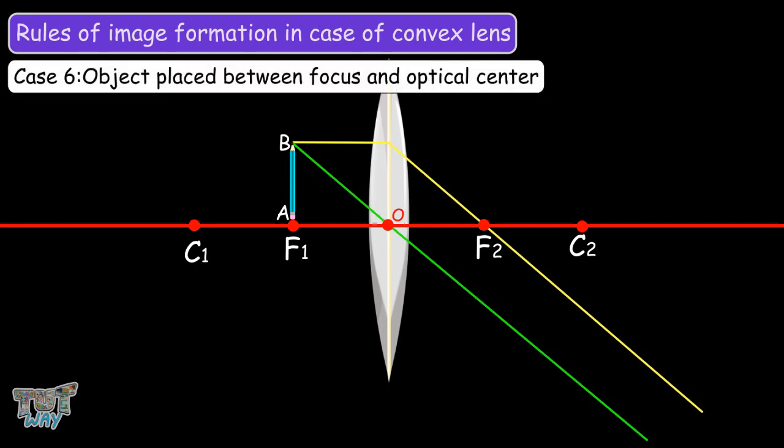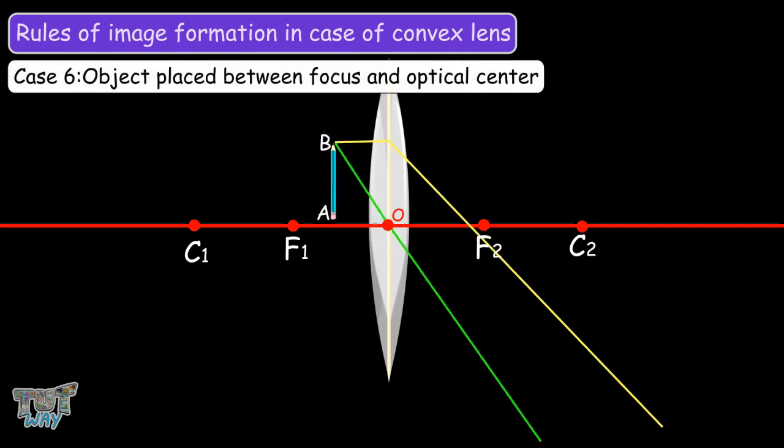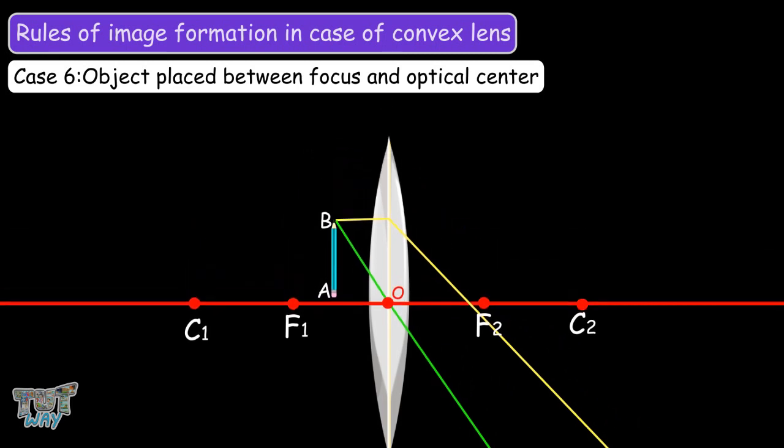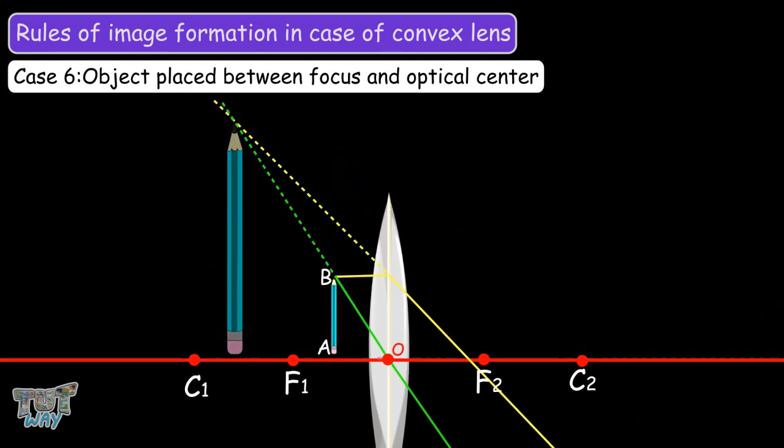Lastly, if you place the object between the focus and the optical center, the image will be formed on the same side as object AB. It will be enlarged and virtual, and also erect, because in this case the rays will not actually converge at a point — they will only appear to converge. So this was image formation in the case of a convex lens.